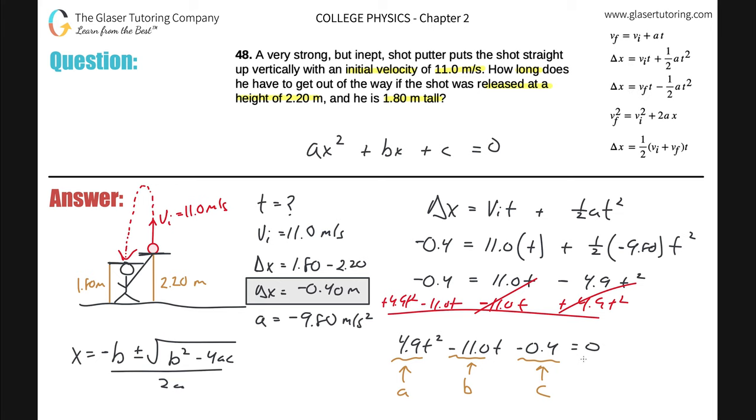So I'm going to open up the program, type in 4.9 for my a, type in negative 11 for my b, and type in negative 0.4 for my c. I get two answers: negative 0.0359 and positive 2.28. You're always going to get two answers basically when you solve a quadratic.